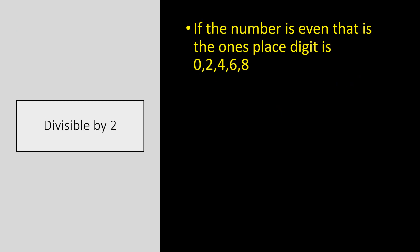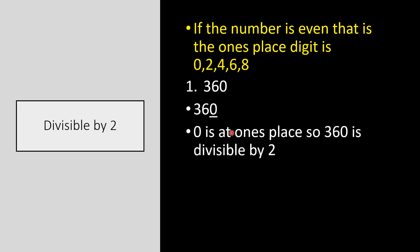Let us check the divisibility rule for 2. If the number is even — that is, the ones place digit is 0, 2, 4, 6, or 8 — then that number is divisible by 2. For example, take the number 360. The digit at the ones place is 0, so 360 is divisible by 2.